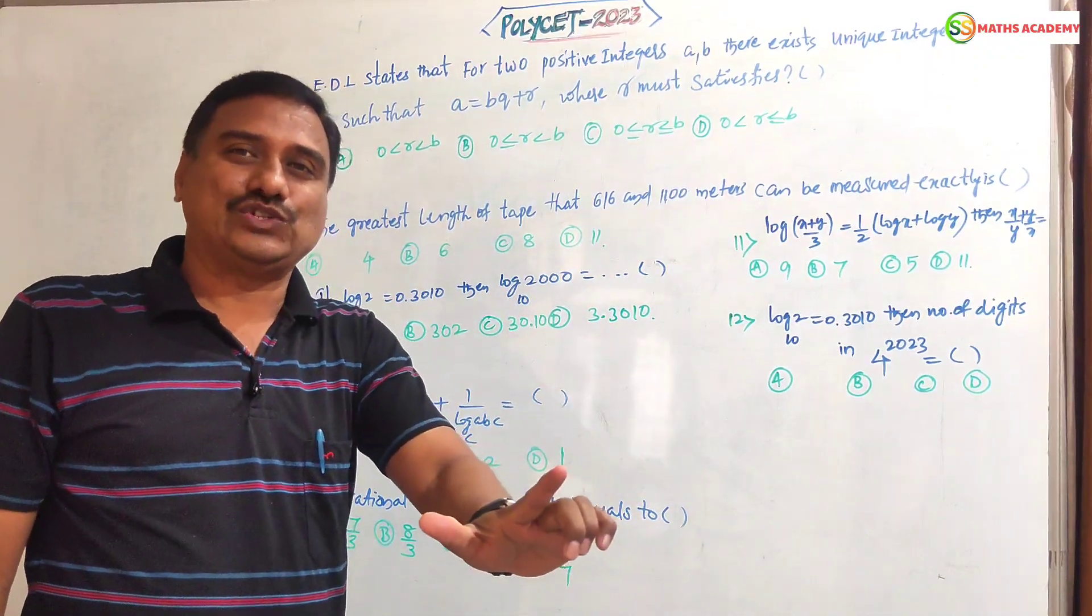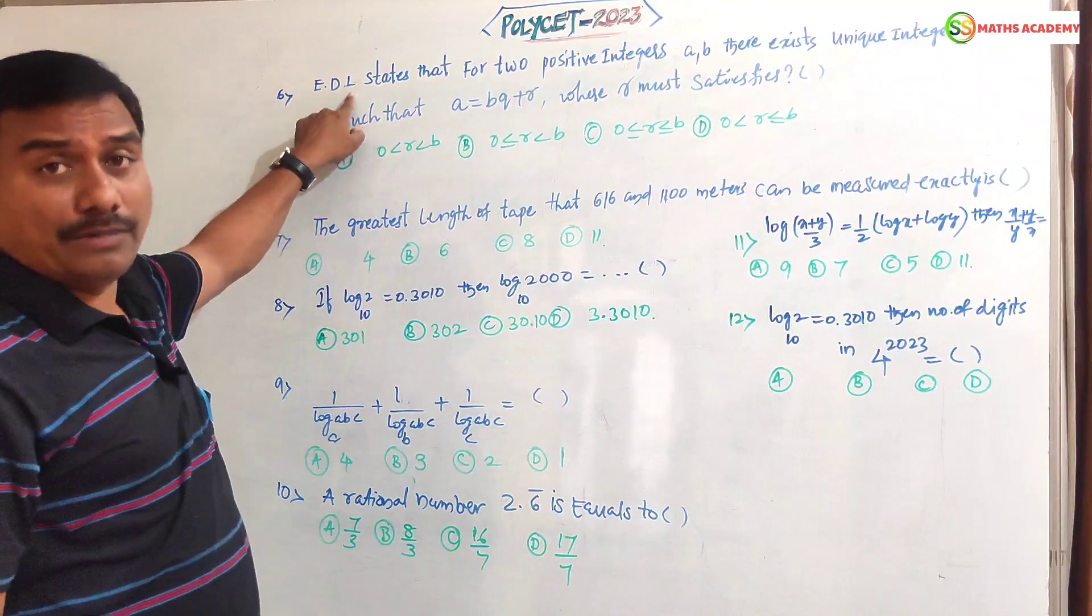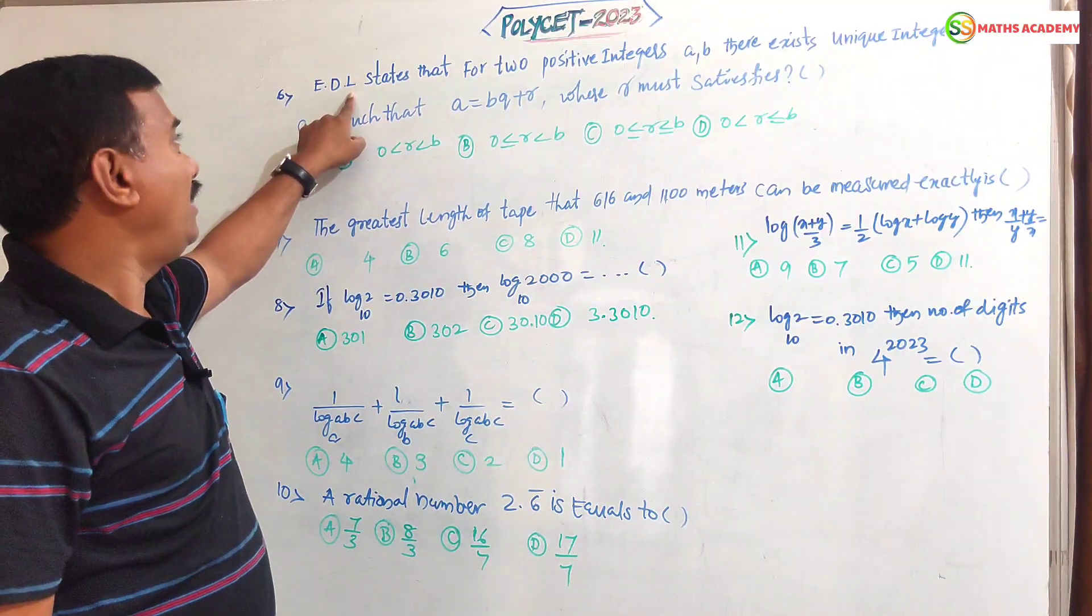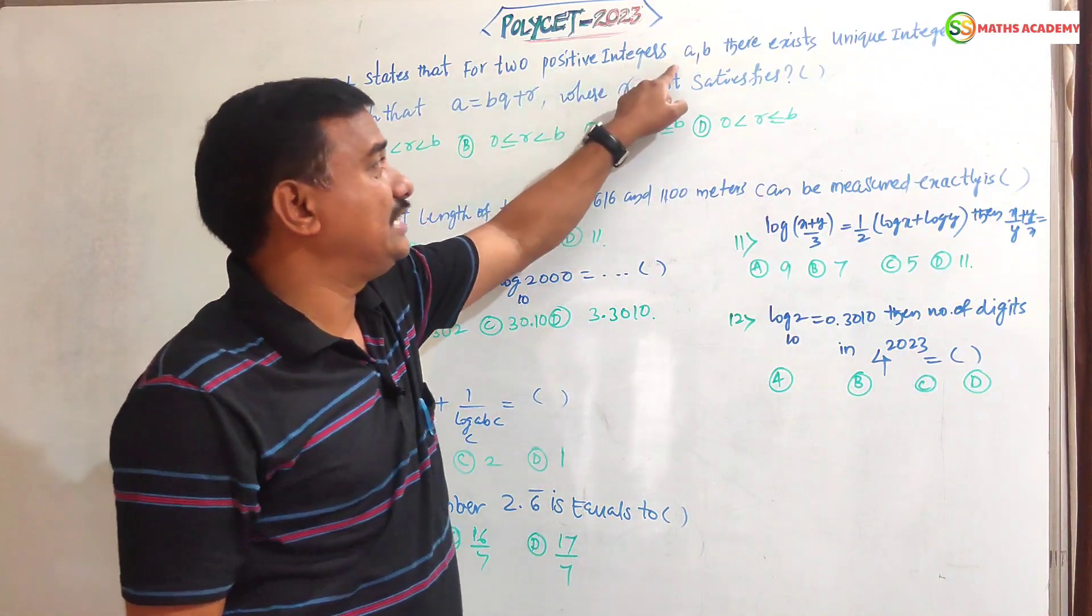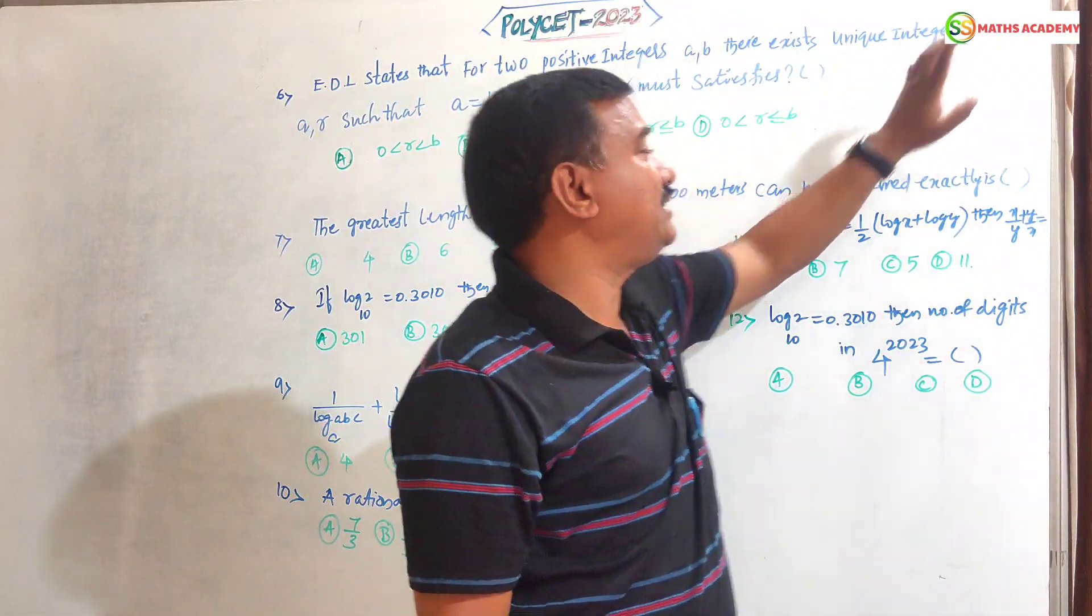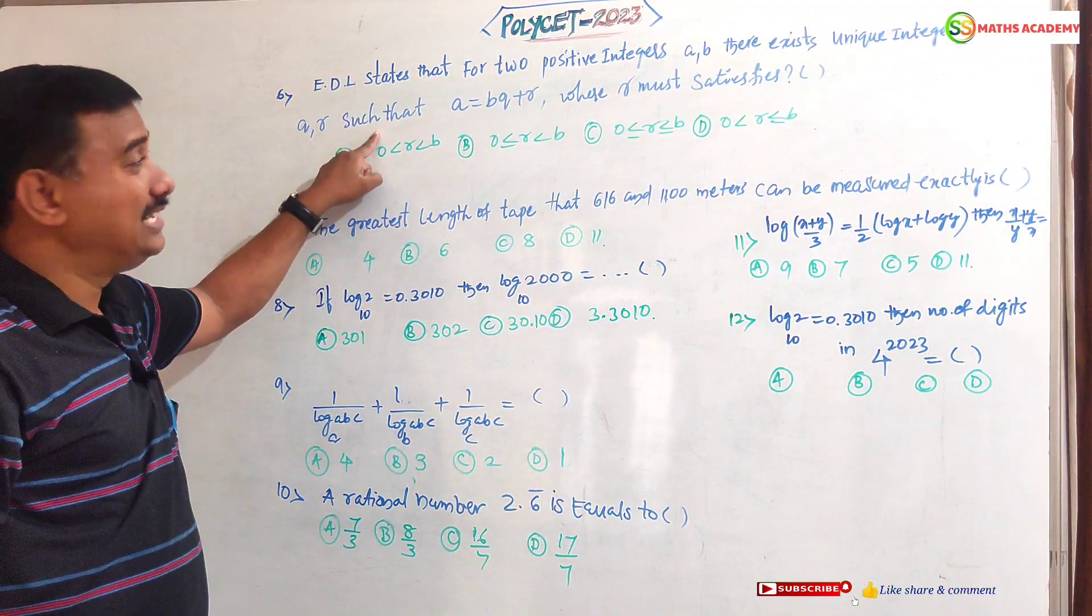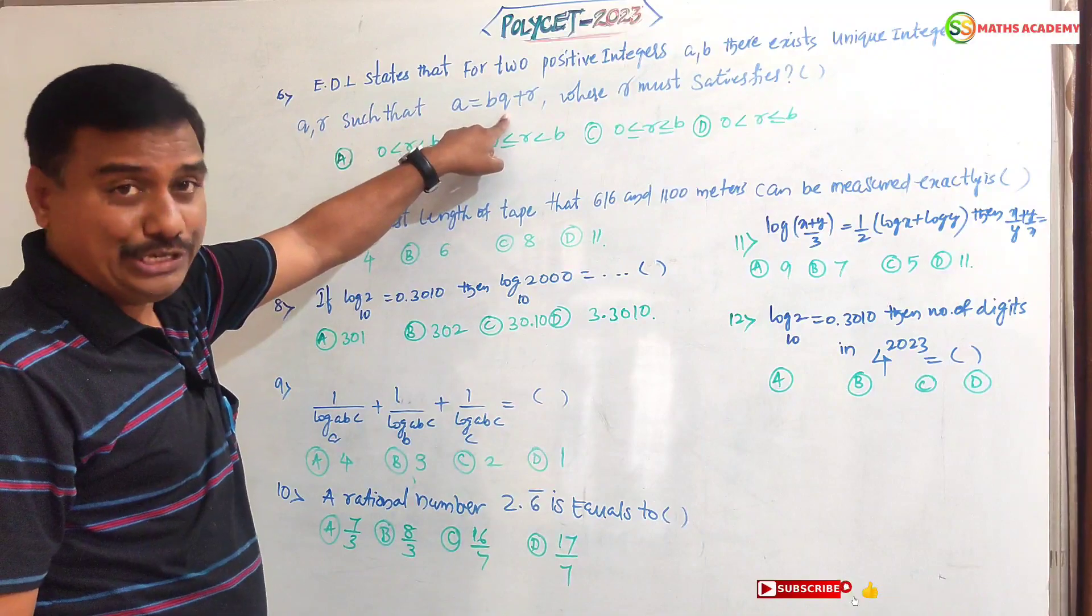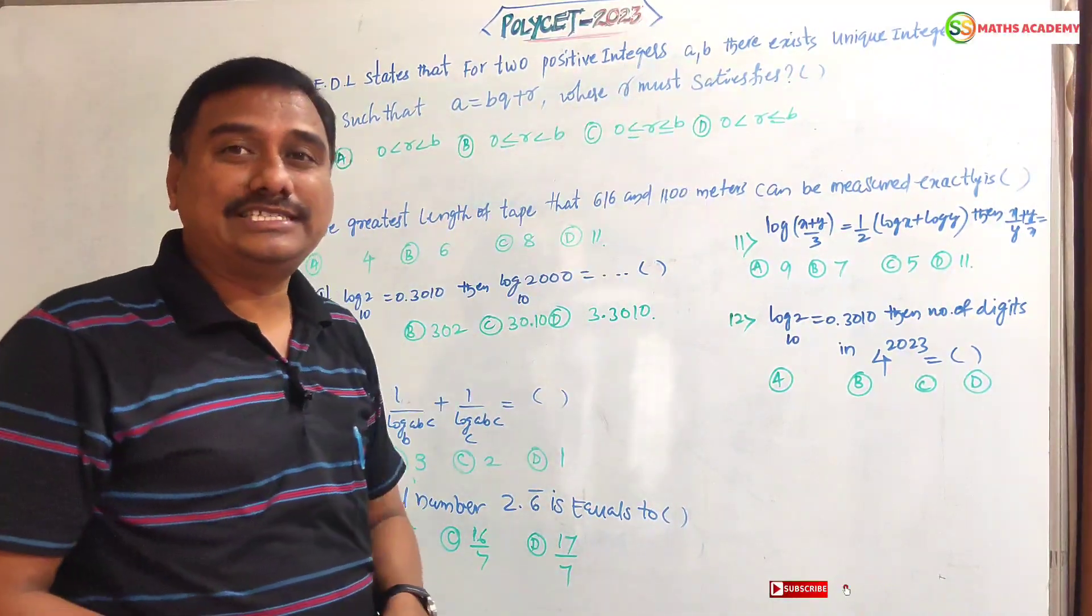The sixth question is based on a concept-oriented question. What is the concept? Euclid division lemma states that for any two positive integers a, b, there exist unique integers q, r such that a is equals to bq plus r where r must be satisfied.